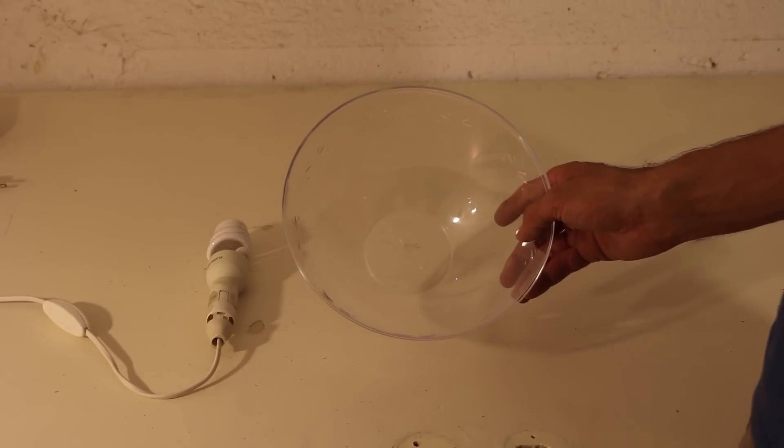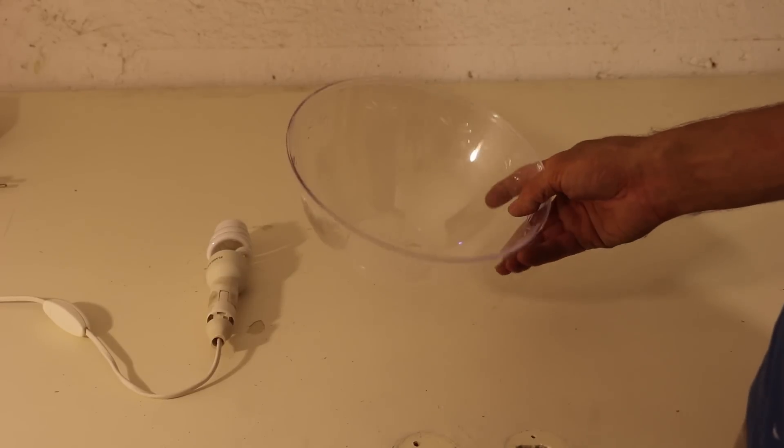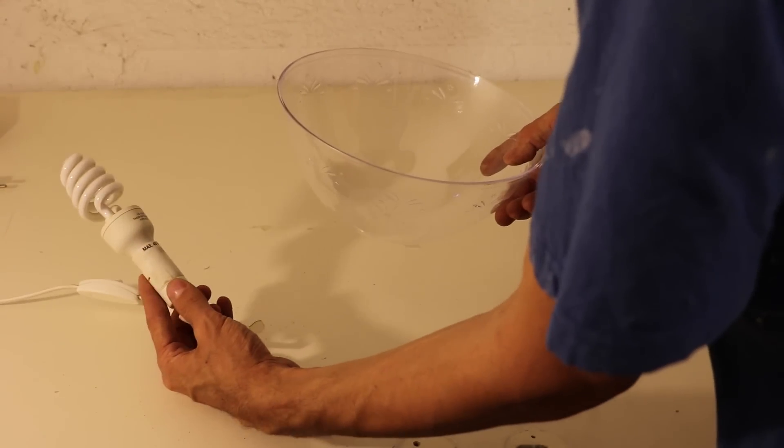As you can see, the lighting in my workshop isn't very good. So in this video, I'll show you how I took care of that using a light fixture and a cheap plastic bowl.